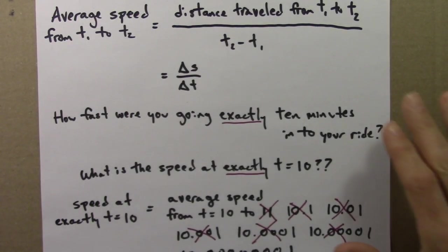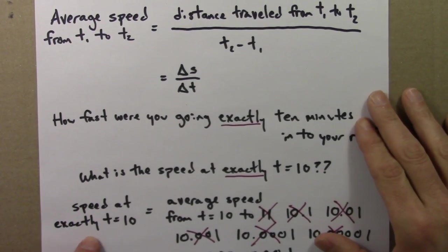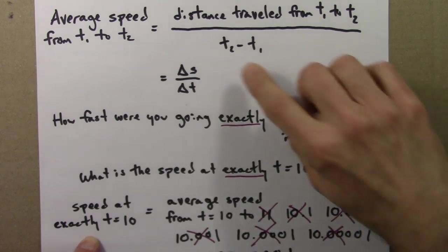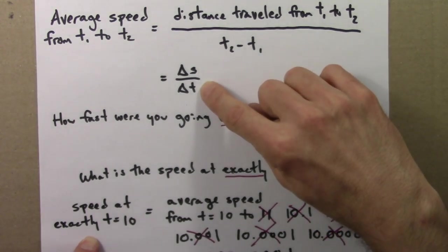Here's another way to think about this. We want to know the speed at exactly t equals 10. Speed is delta s over delta t.